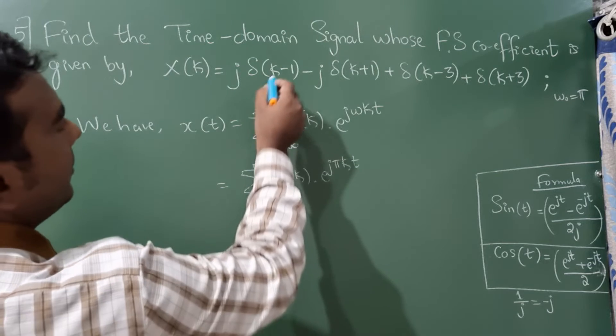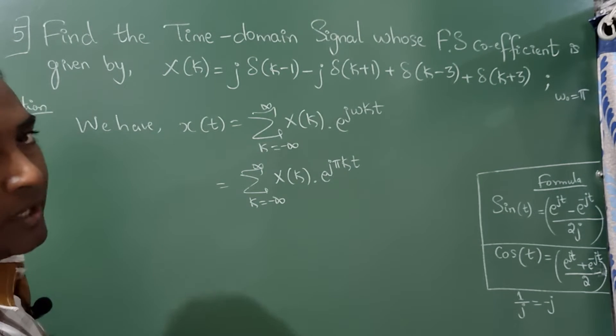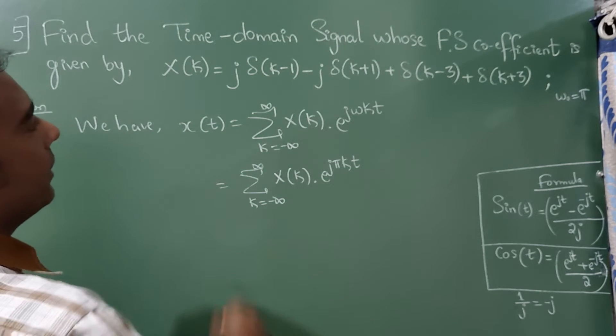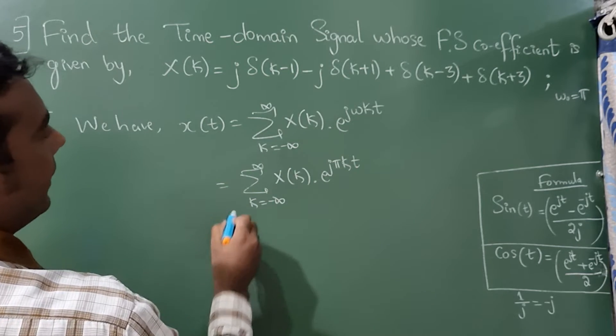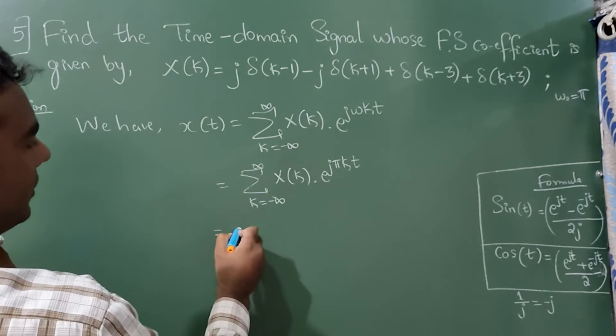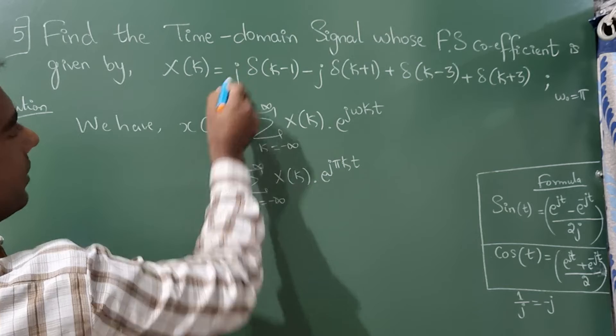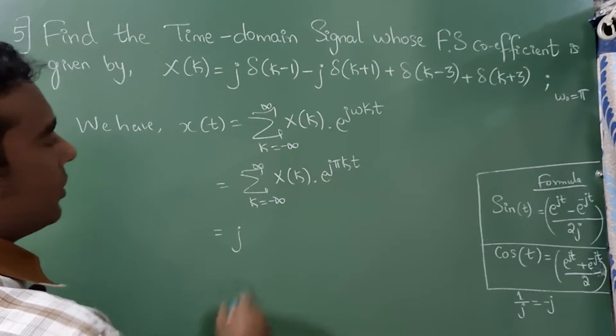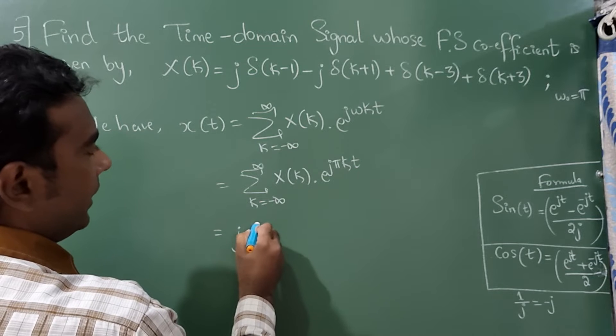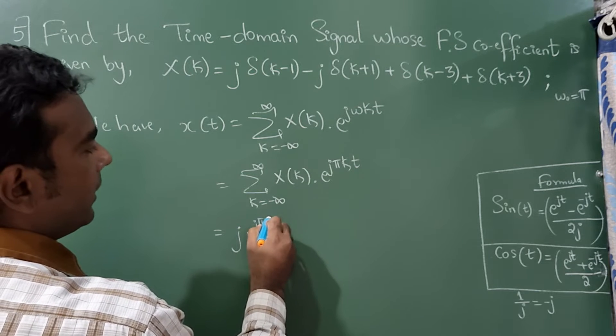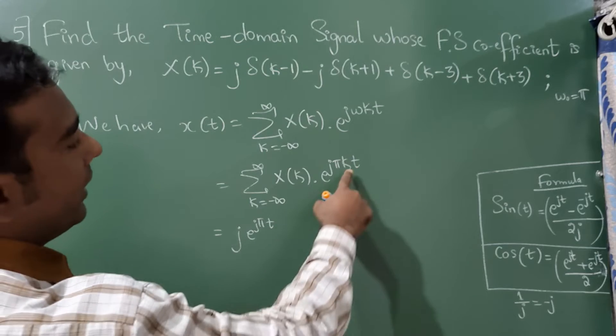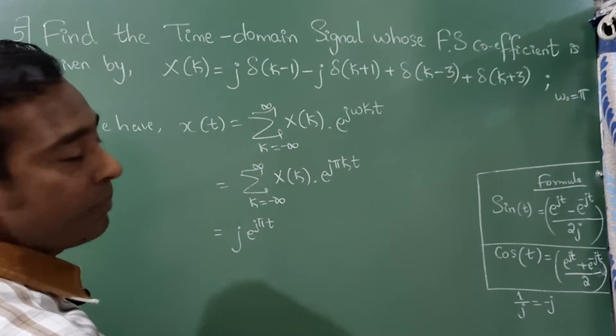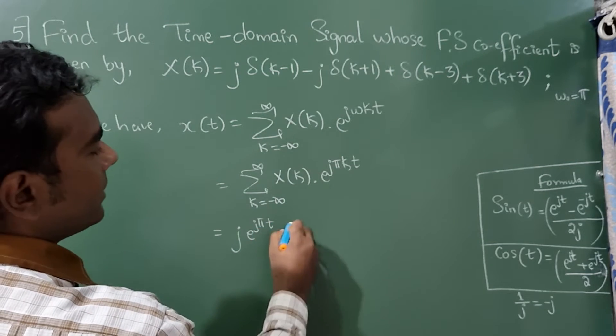Now from this, this is unit impulse sequence. So I can write this as j because there is a j here. K equal to 1, so what I can write is e raised to j pi t. K value is 1 here. Minus j.